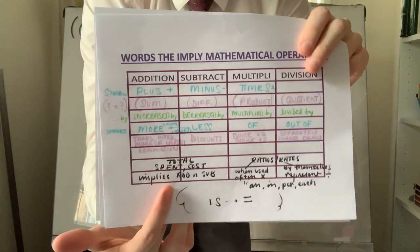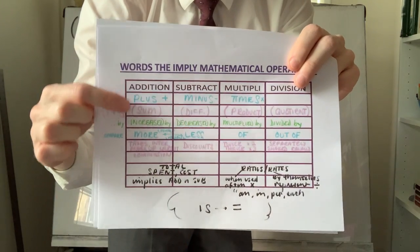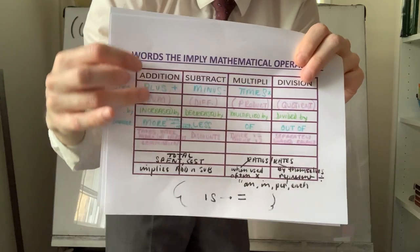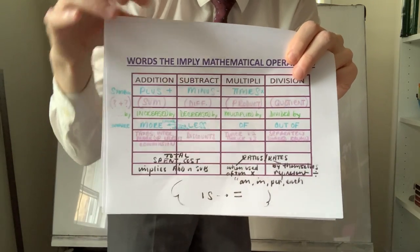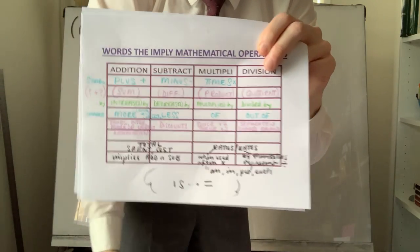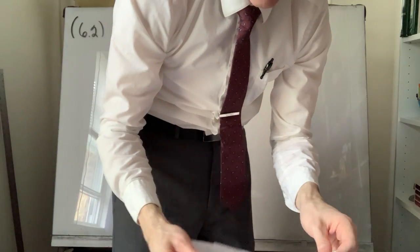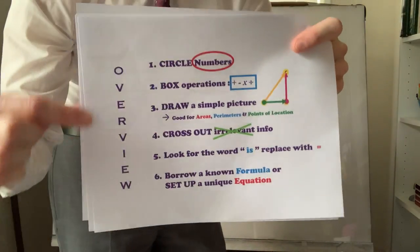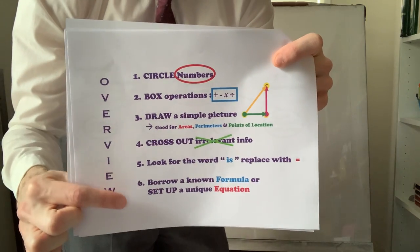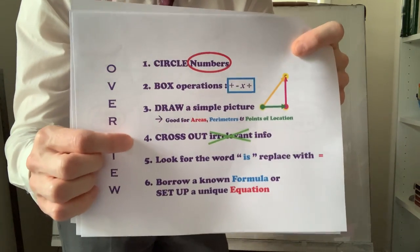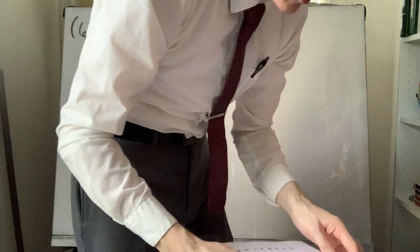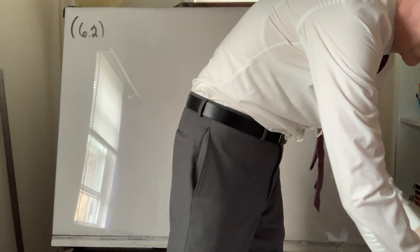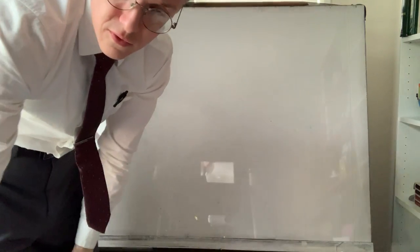There's a review packet available from MAT 113. If you had me for 113, we compiled a list of English words and how they translate to mathematical operations. If you have to dissect a word problem and create an equation from scratch, that is the strategy I employ myself, so if you're interested, print that out.